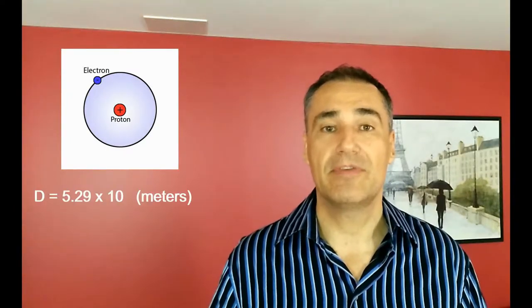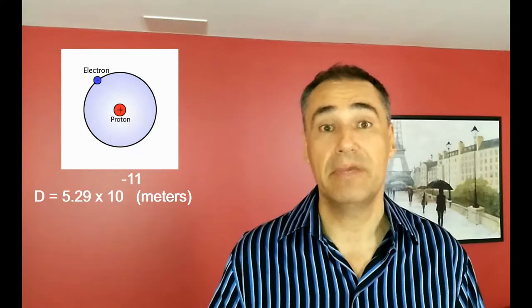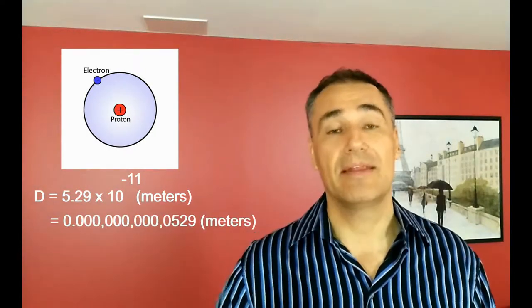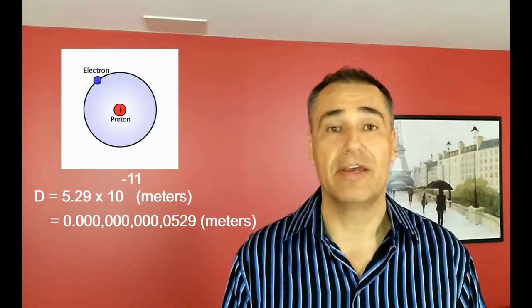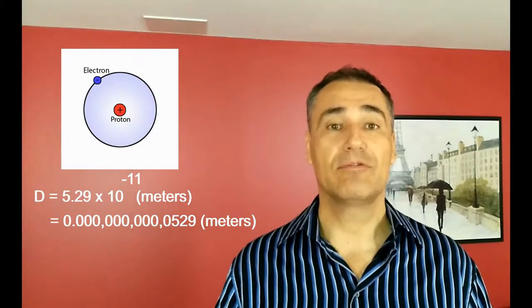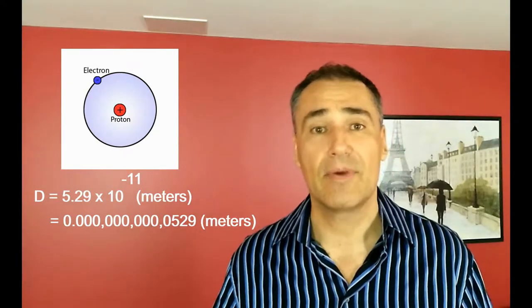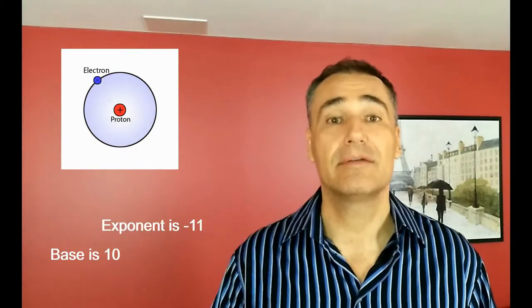So when you look at the hydrogen atom itself, let's take a look at the diameter. It's actually 5.29 times 10 to the negative 11th meters. When you write it out, that's 11 zeros. And that's to the negative side. So you can see just by this example that writing out 5.29 times 10 to the negative 11 is a lot easier than writing out all those zeros. So in this case, the base is 10 and the exponent is negative 11.